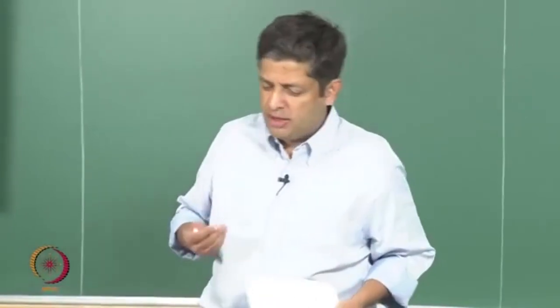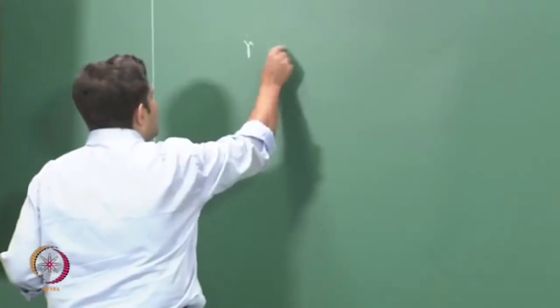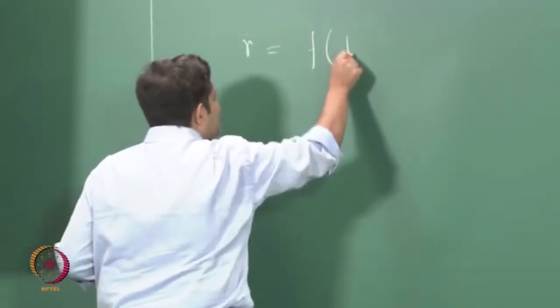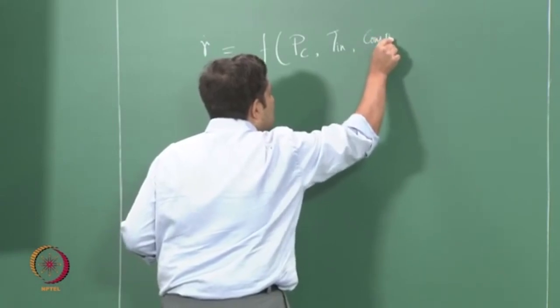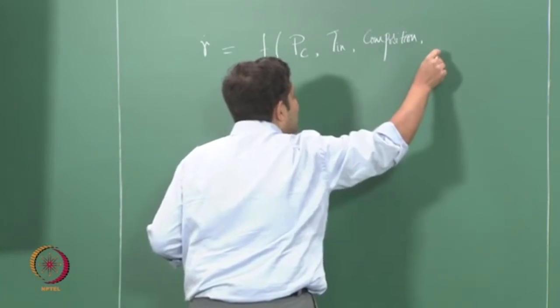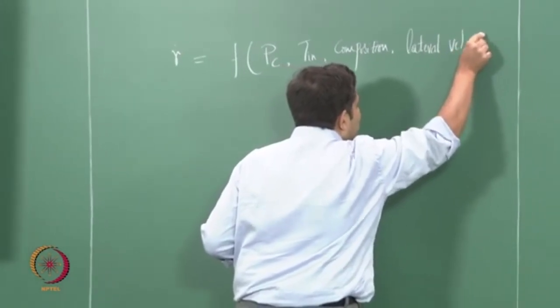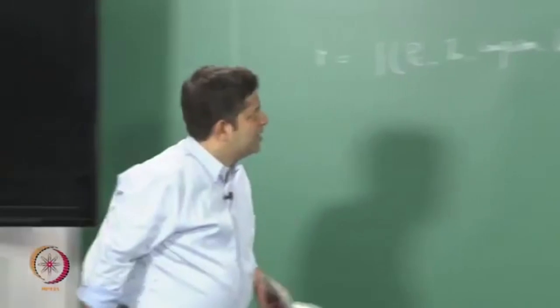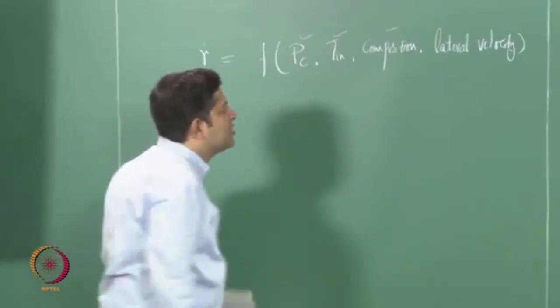In the last few classes we have looked at how solid propellants behave. We had looked at how the solid propellant burn rate varies with pressure and initial temperature. The burn rate of a solid propellant is a function of chamber pressure, initial temperature, composition, and lateral velocity. These were the four things it depended on. We have seen the first three; in this class let us look at how the burn rate varies with lateral velocity.